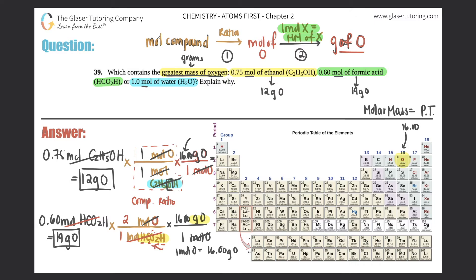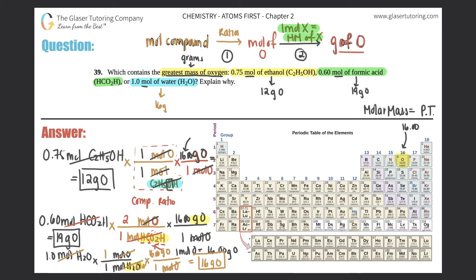Now for the last one: 1 mole of H2O. Mole of H2O goes on the bottom, mole of oxygen up top. If you have one mole of H2O, how many oxygens are in H2O? There's only one, so one mole of oxygen. That cancels out the mole of H2O. Then we multiply by another ratio: mole of oxygen on the bottom, grams of oxygen on top. One mole of oxygen equals 16. That cancels, and we get 1 times 16, which is 16 grams of oxygen — that's the answer to the third one.